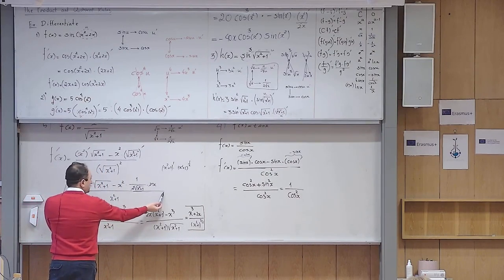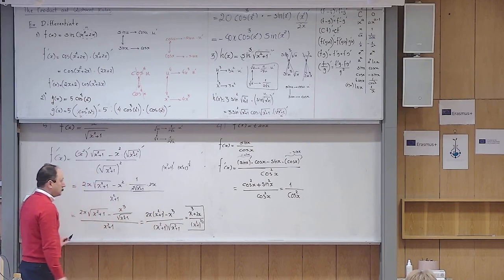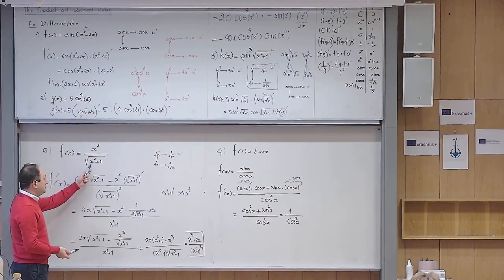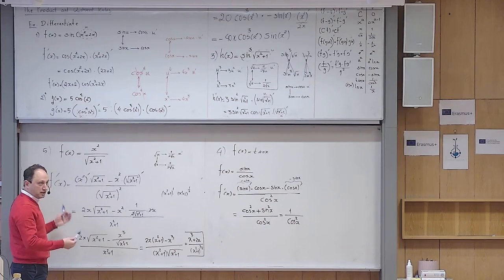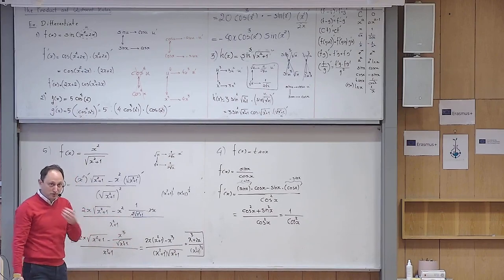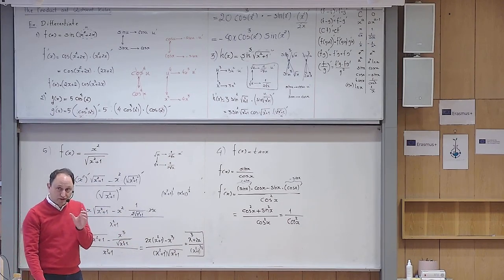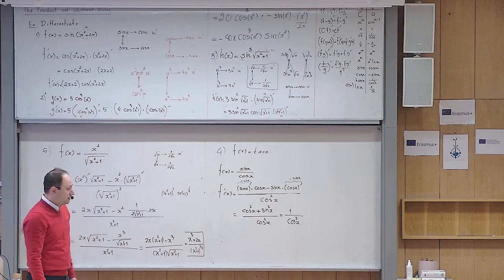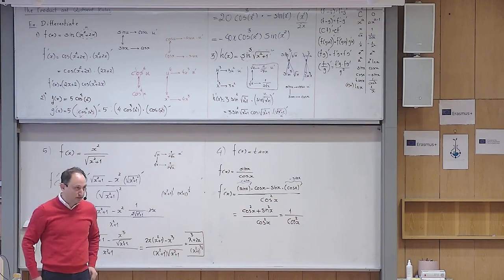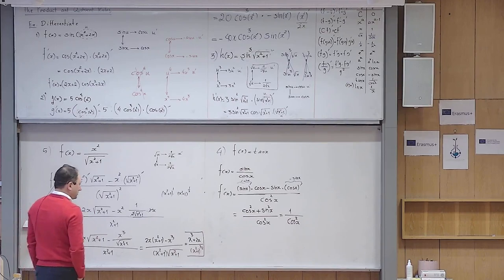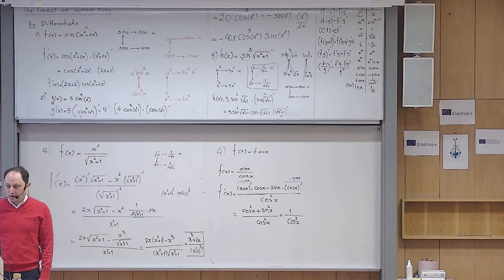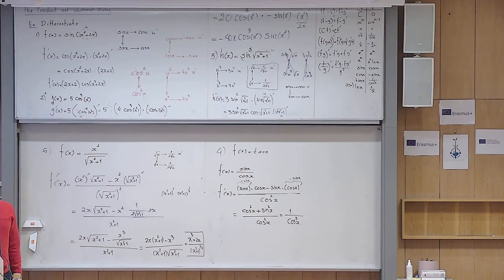Today's lesson ends at the differentiation step. The rest is simplification. Sometimes simplification is needed — for example, if asked to find maximum and minimum, you differentiate and set equal to zero. Putting the unsimplified form equal to zero is harder. So if differentiation is all that's needed, simplification is not that important. But if you're going to work with the derivative further, then simplification matters. Any questions? We stop here. Thank you.